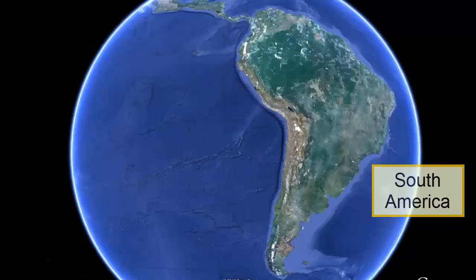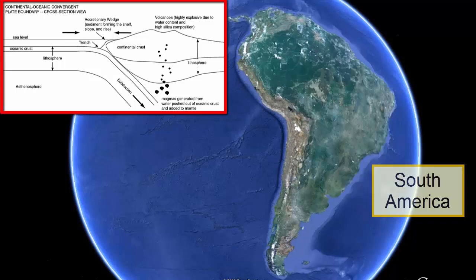Now that we know where the plate boundaries are, how can we determine what types of boundaries they are? We can measure their movement and we can study the surrounding topography, bathymetry, and geology. For example, what do we see in South America that shows us subduction is going on? The dark blue arc-shaped deep trench on the sea floor forms as the plate subducts.